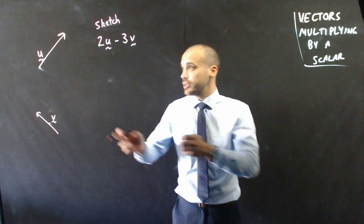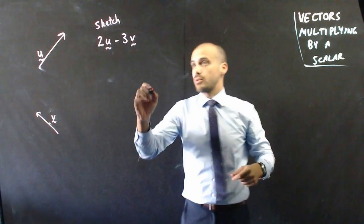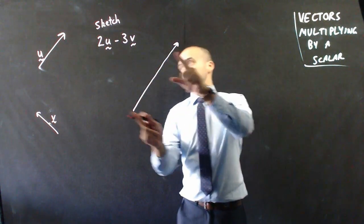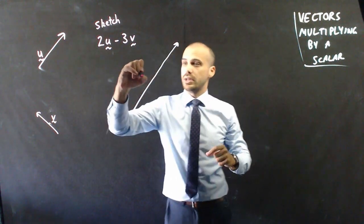What does 2u look like? Well, it's twice as long as that. We've already done this one. It goes from there up to there. That's about twice as long as that. Good. That's 2u.